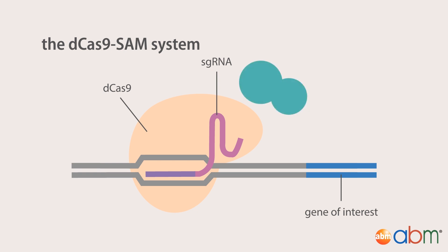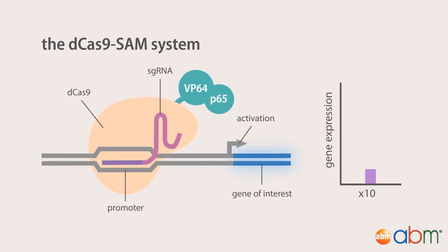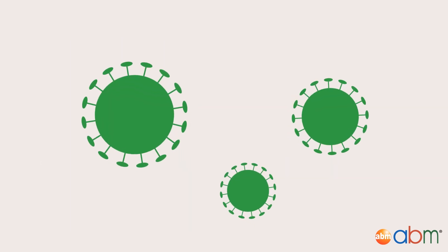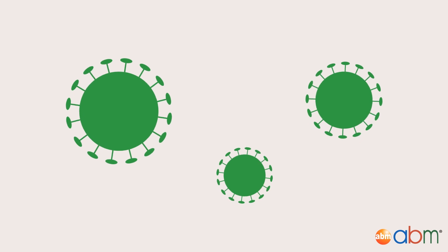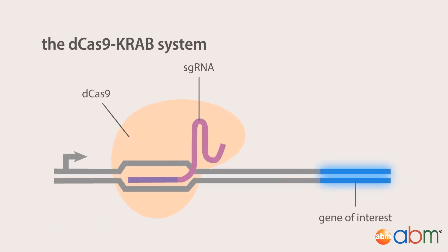This is accomplished by fusing dCas9 to an array of transcriptional activators such as VP64 and p65, and using sgRNAs targeted to endogenous promoters. This dCas9 SAM system can amplify gene expression by 10- to multiple-thousand-fold. This effect is so powerful that researchers are already using dCas9 SAM to eradicate HIV-1 in infected organisms.